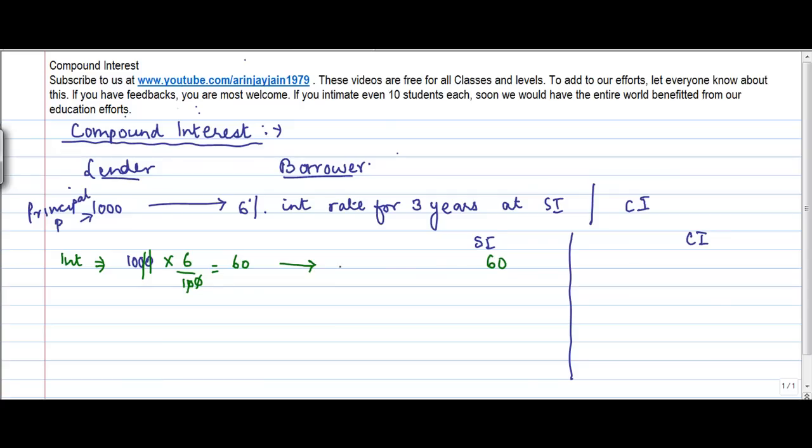So simple interest is 60. This is year one. The simple interest is 60, the compound interest also remains 60, and this is only for year one.